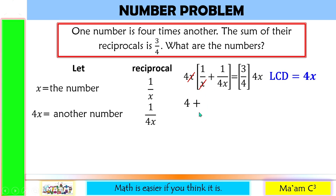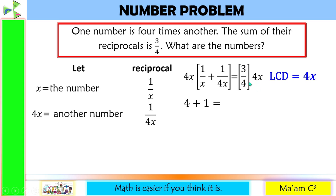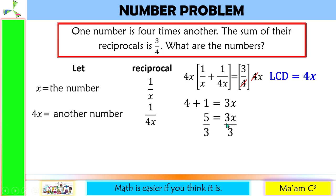Continuing: 4x divided by 4x gives us 1 times 1, which equals 1. On the right side, 3 over 4 times 4x — the 4s cancel — leaving 3x. Adding 4 plus 1 gives us 5, and dividing both sides by 3 gives x equals 5 over 3.